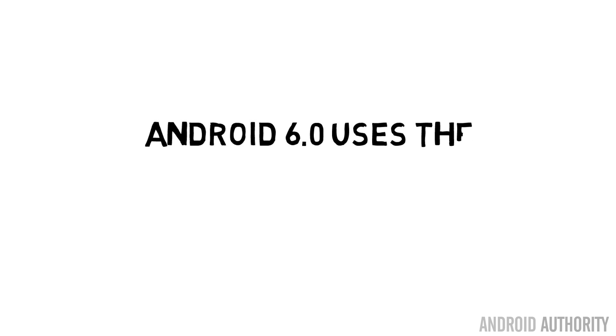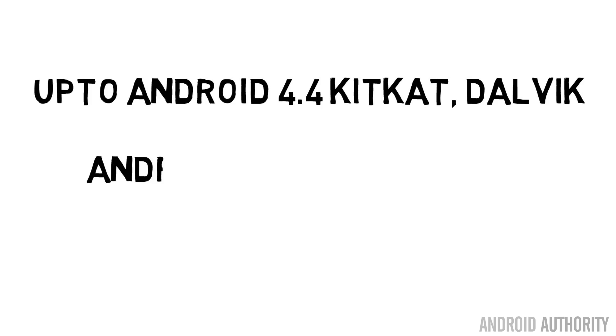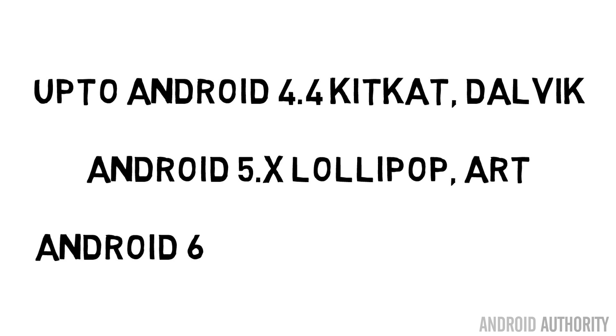From Android 5.0, the default virtual machine became ART, the Android Runtime. ART uses ahead-of-time compiling, meaning when a program is installed, it is compiled in the background for the processor of your particular machine — probably an ARM processor. Then with Android 6.0, ARM worked with Google to improve the ahead-of-time compiler so the generated machine code was even more efficient. This was known as the optimizing compiler. We'll see in the results how these three different Java virtual machines affect performance.